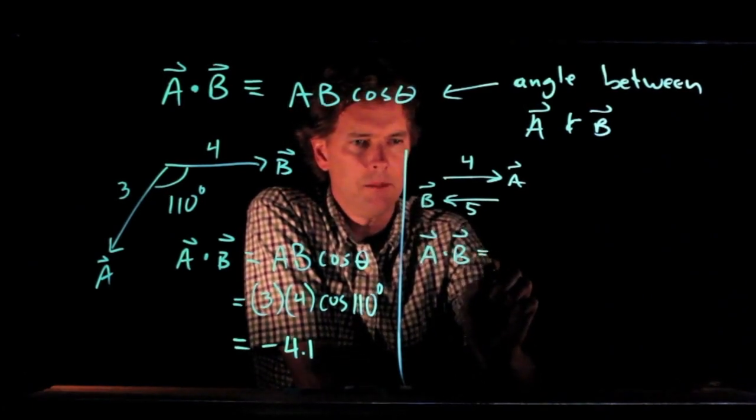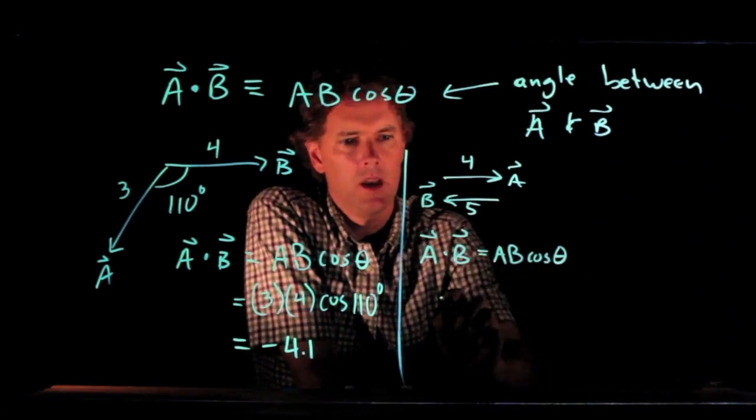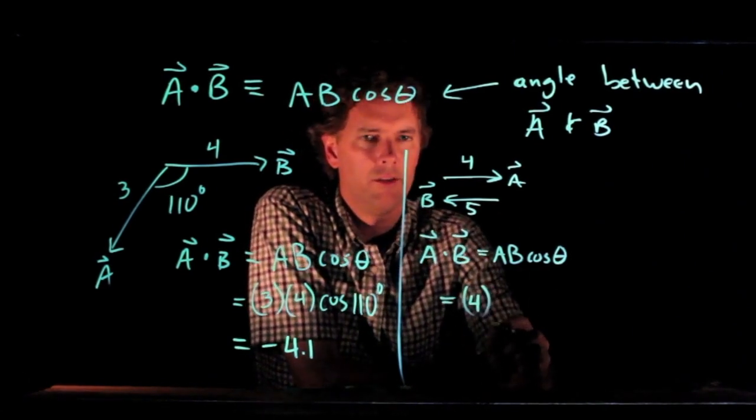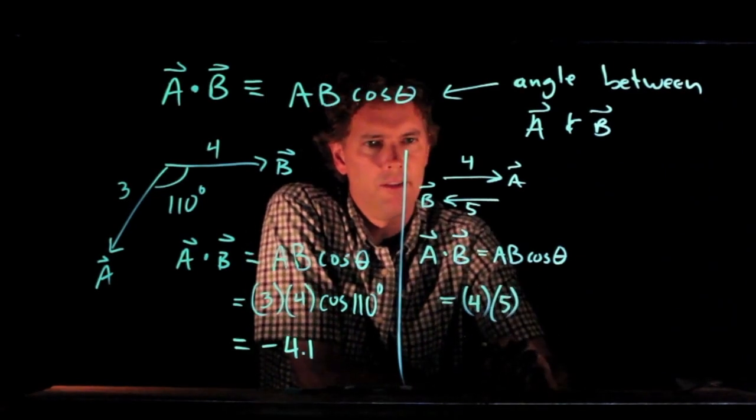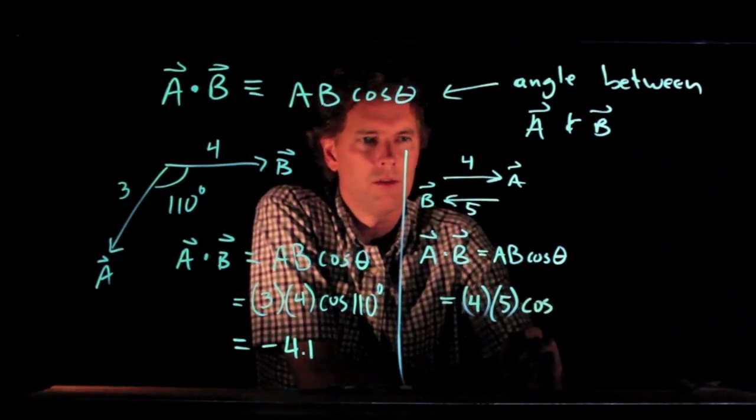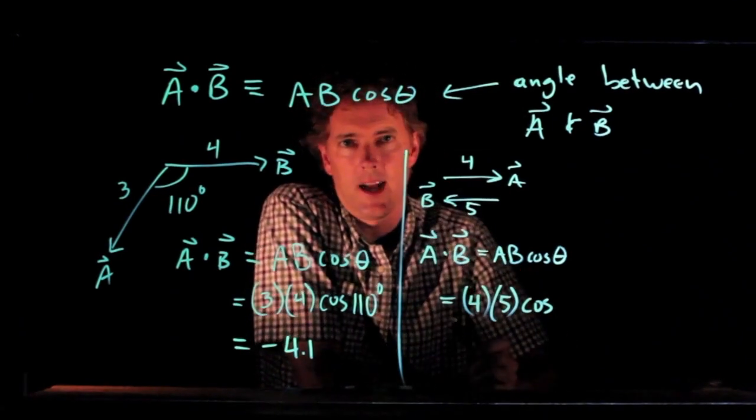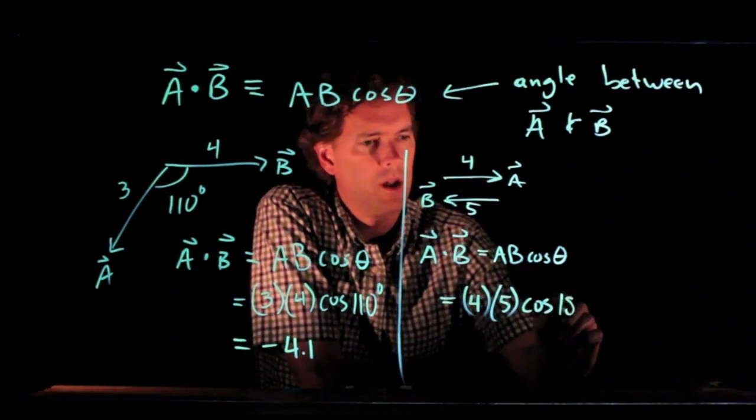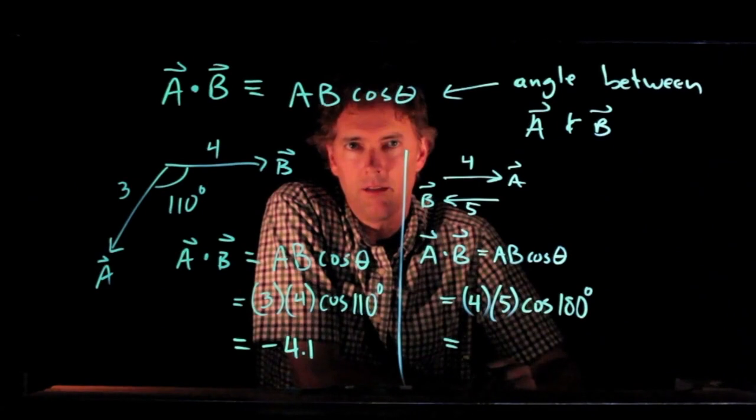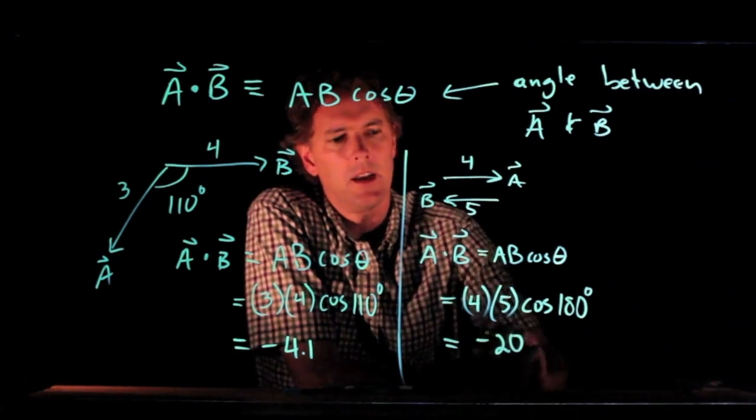Well, again, A dot B is AB cosine of the angle between them. In this case, we have magnitude 4 for vector A, magnitude 5 for vector B, and theta is what? A is pointing to the right, B is pointing exactly to the left. So, theta is 180 degrees. Cosine of 180 degrees is negative 1. And so, for this problem, we get negative 20.